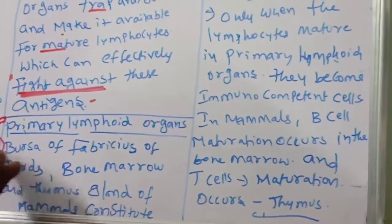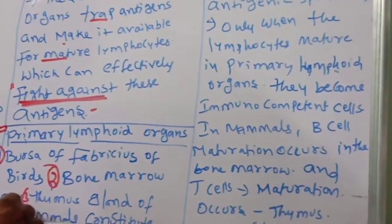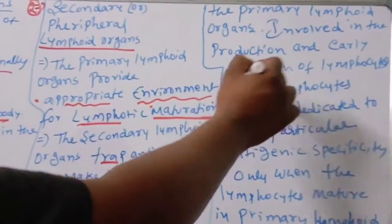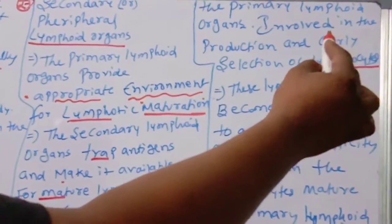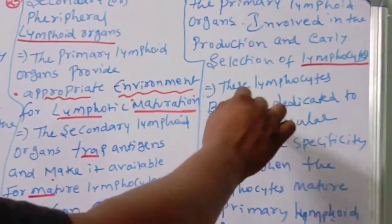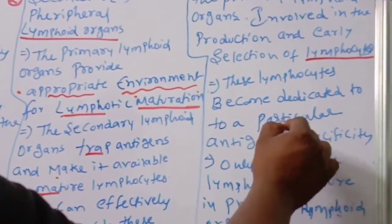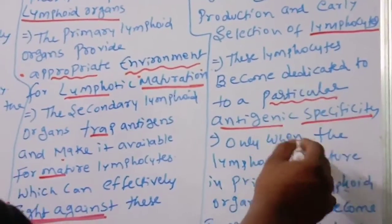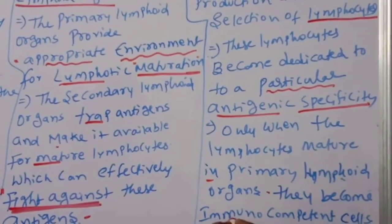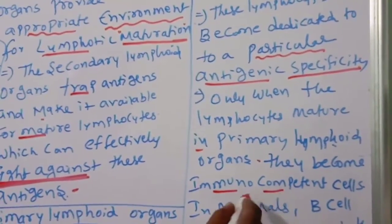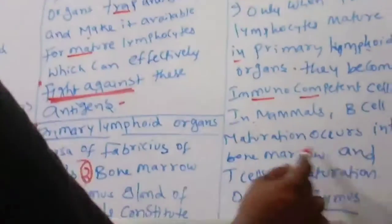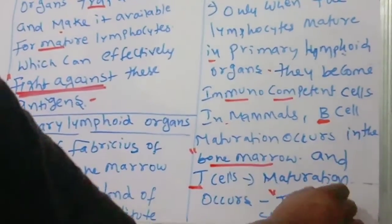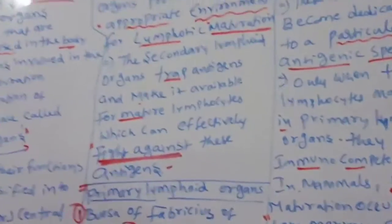The primary lymphoid organs are: number one, Bursa of Fabricius; number two, bone marrow; number three, thymus gland. These are involved in the production and early selection of lymphocytes. These lymphocytes become dedicated to a particular antigen — that is why they are called antigenic specificity. Only when the lymphocytes mature in the primary lymphoid organs do they become immunocompetent and ready to fight. B means bone marrow, T means thymus.